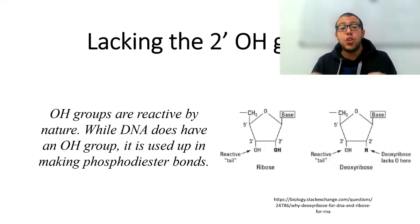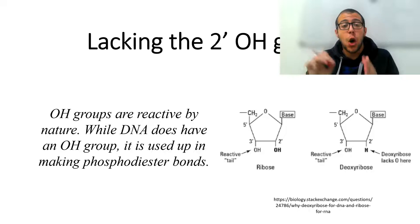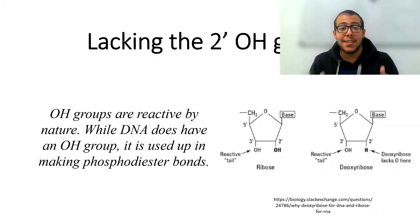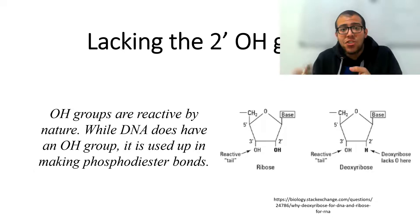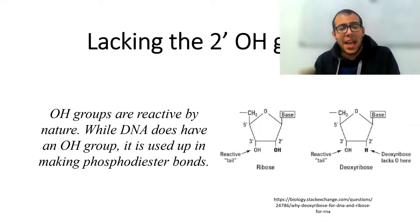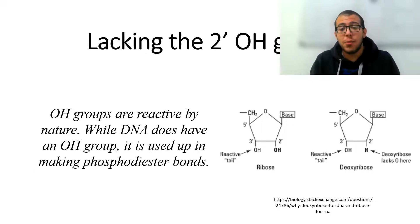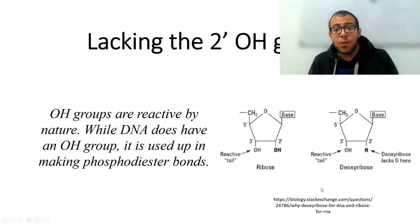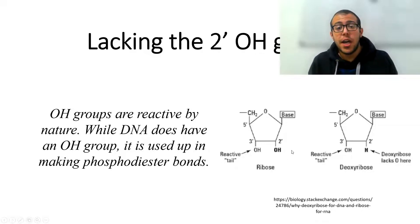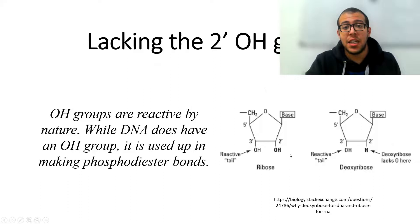Next, due to the lack of the 2-prime — or the second carbon — OH group in DNA. The OH group is actually reactive by nature, so the lack of it makes DNA less reactive and more stable than RNA, which has two reactive OH groups present in the ribose.